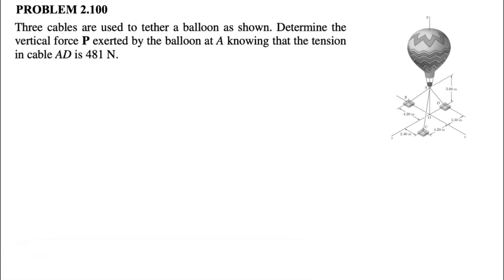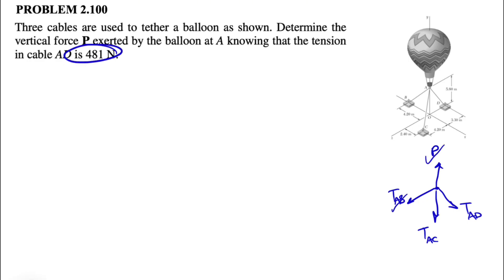Drawing the free body diagram for point A, we have the force P acting upward and three cable tensions: T_AB, T_AC, and T_AD. We know T_AD is 481 Newtons, leaving three unknowns: P, T_AB, and T_AC. Since this is a 3D equilibrium problem, the sum of all forces equals zero, giving us equations in x, y, and z — three equations to find the unknowns.